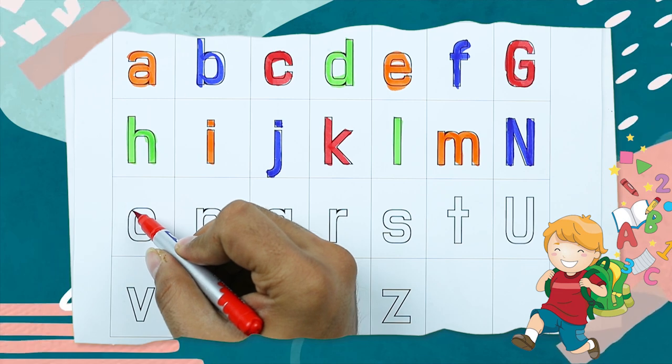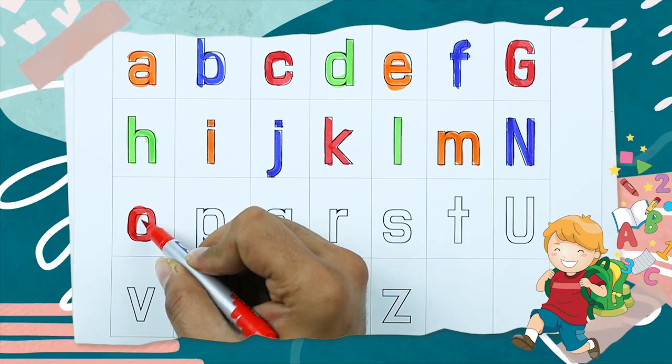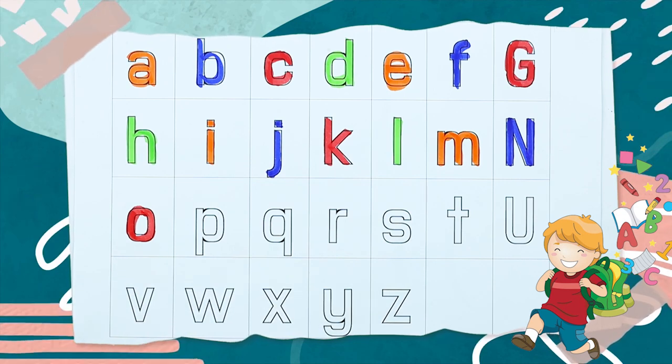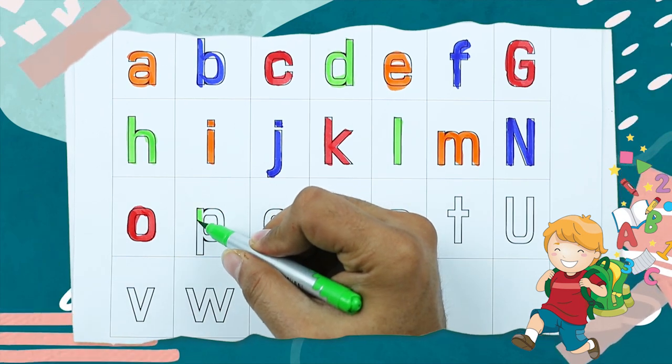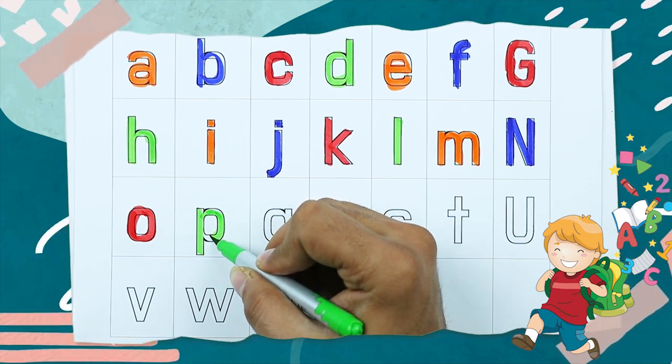O, it's small o, O for octopus. P, P with green color, P for parrot.